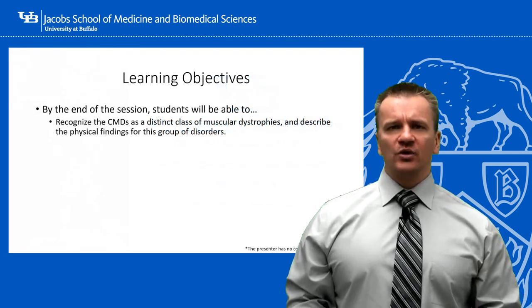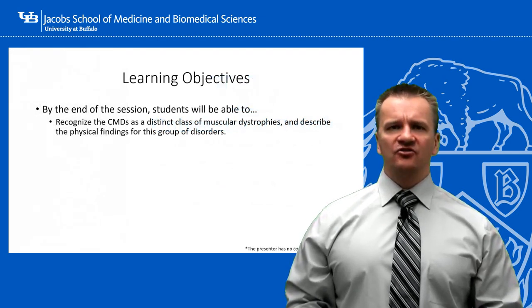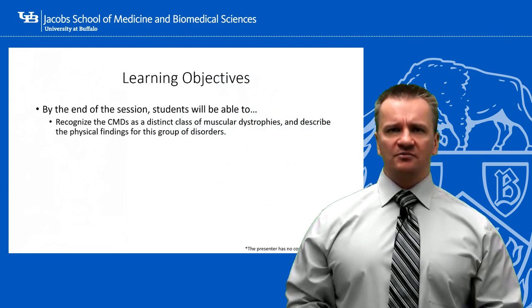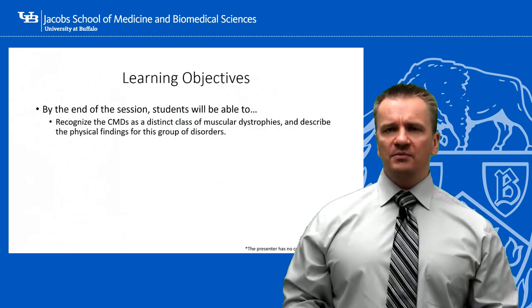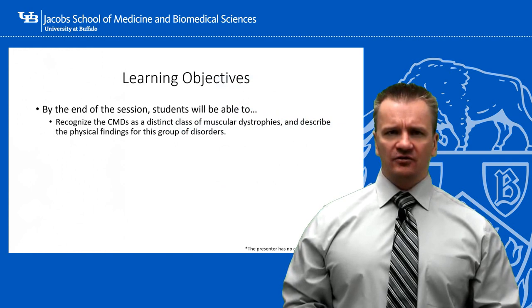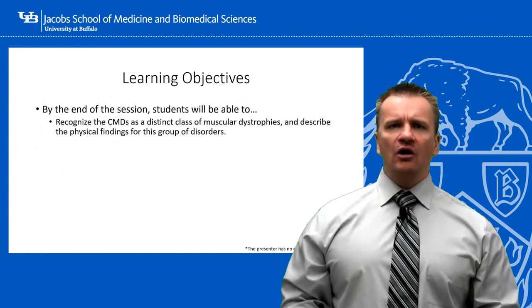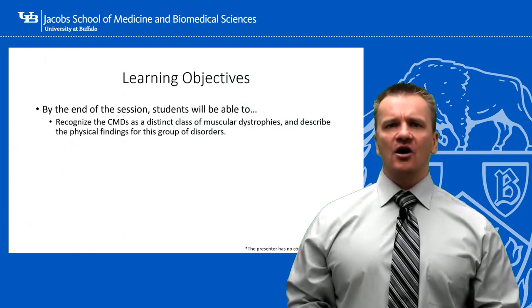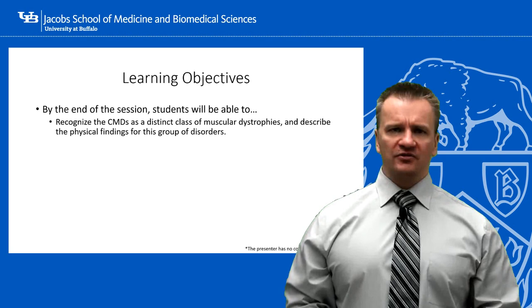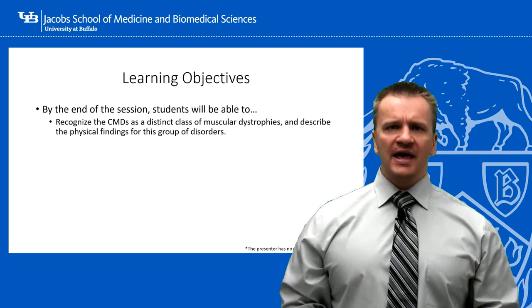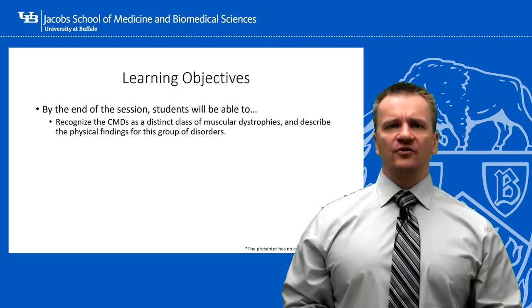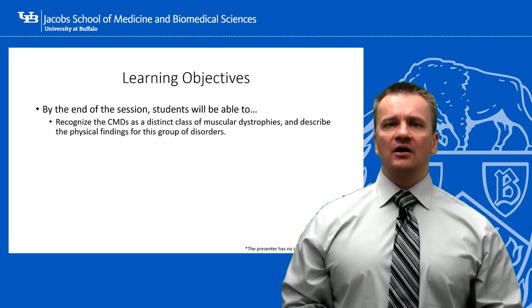In this session, we will describe the general presentation pattern for limb-girdle muscular dystrophy, treatment options, and prognosis. We'll also identify some of the gene mutations known to cause limb-girdle muscular dystrophy and how they contribute to the dystrophin-associated glycoprotein complex.